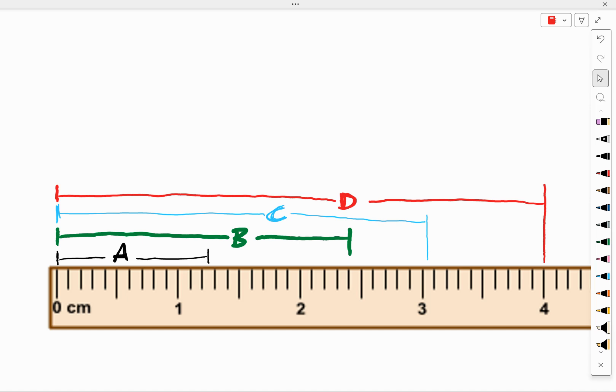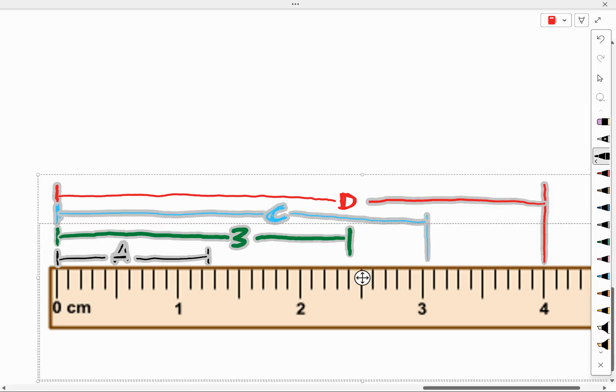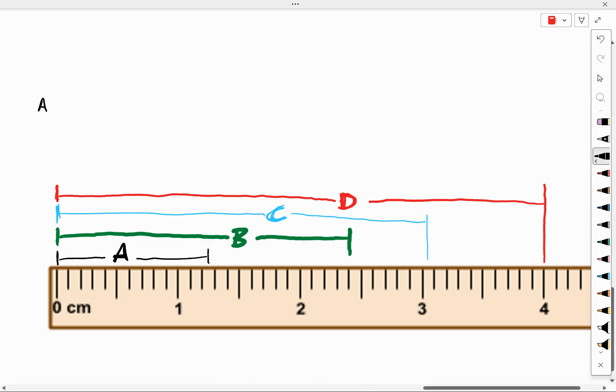Object A, my black line. What would you record for that length for object A? Recalling that each of these should give us a measurement that goes to the hundredths place and gets labeled in centimeters.